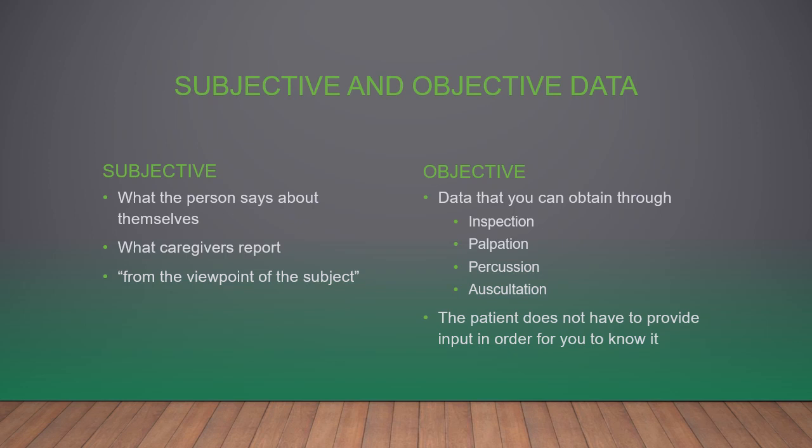Objective data is data that you as the examiner can obtain through the steps of assessment: inspection, palpation, percussion, and auscultation. The patient does not necessarily have to provide input for you to know it is there. This includes things like increased work of breathing, diaphoresis, vital signs, lab work, EKGs, lung sounds, heart sounds, skin turgor, edema, and wound assessment — things you can assess without the patient necessarily participating beyond being present.